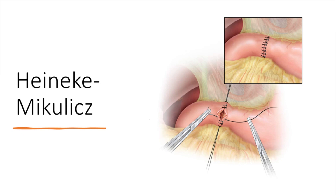Once the incision has been made, that is the main step of the pyloroplasty. All that remains is to close the incision in that transverse fashion. This closure is appropriate when there is no distortion, no scarring around the duodenum, and the pyloroplasty incision is not too large — usually around five centimeters, and less than seven centimeters.